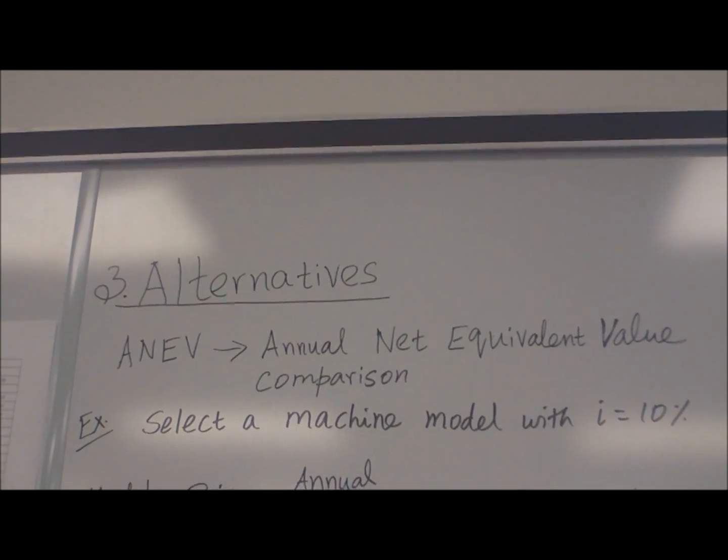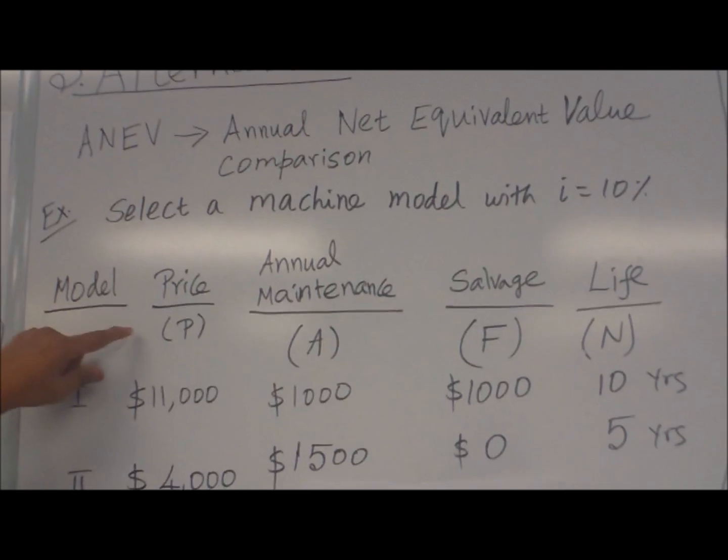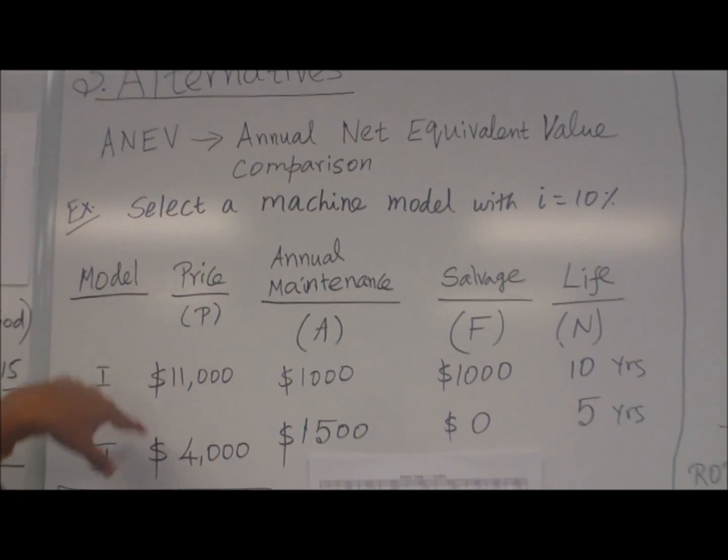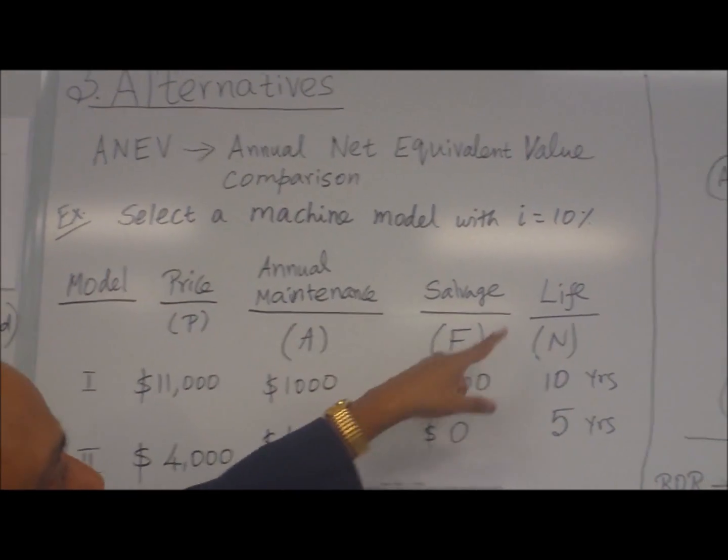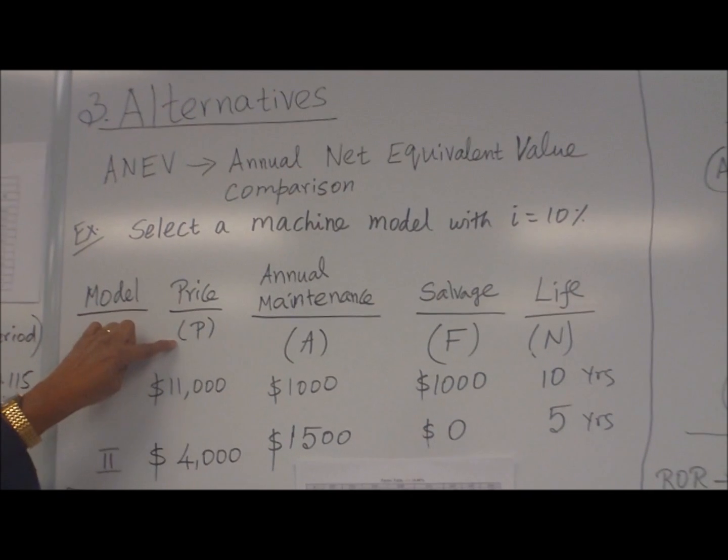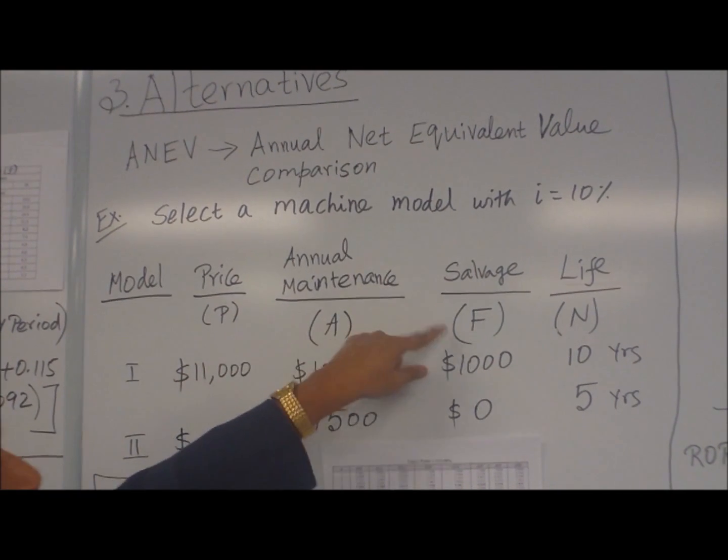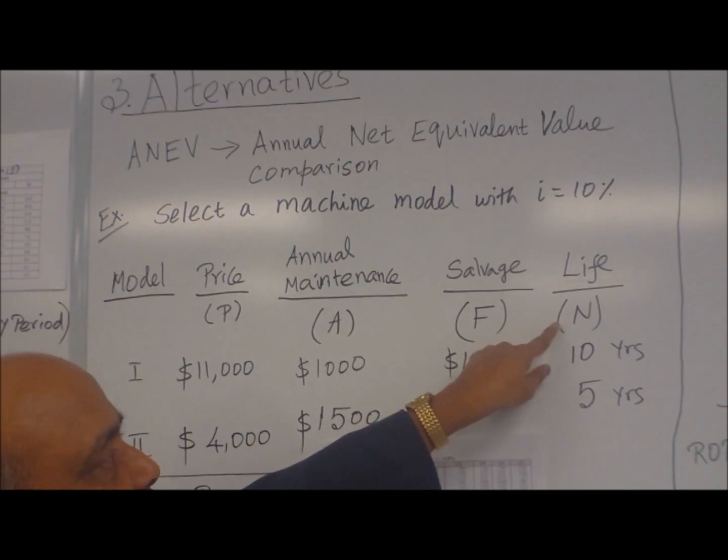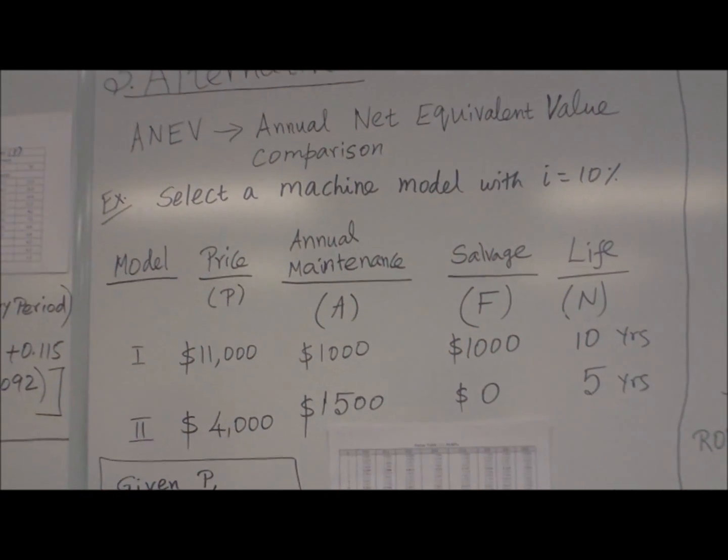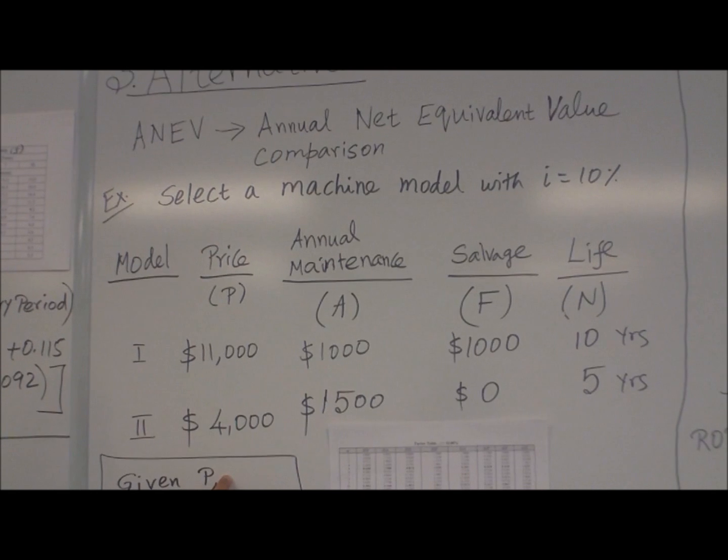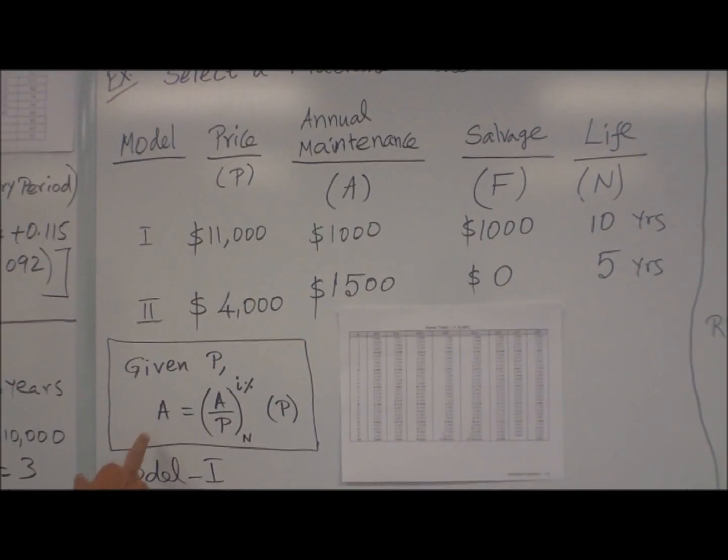Model 1 and 2, there are two different model machines. In the example, the price is given, annual maintenance, salvage, and life. The price is your present value, annual maintenance is your A value, salvage is your future value, life is your N number of years. Given a parameter, let us say P present value, how to find A? A equals (A/P) at N years and I percent interest rate multiplied by P.